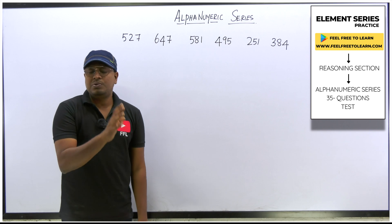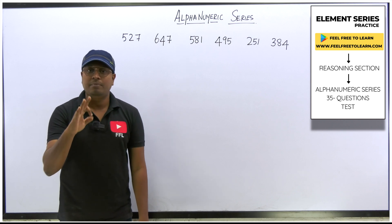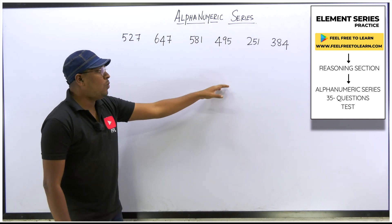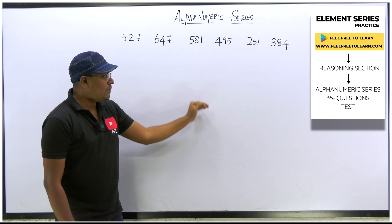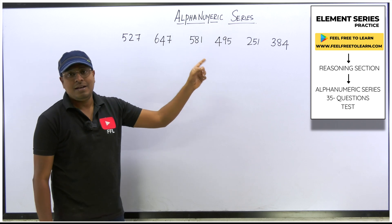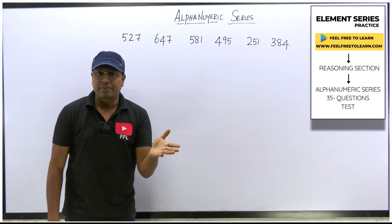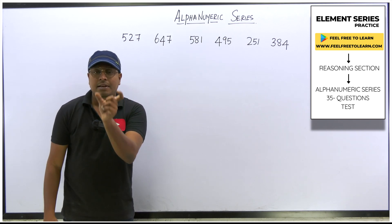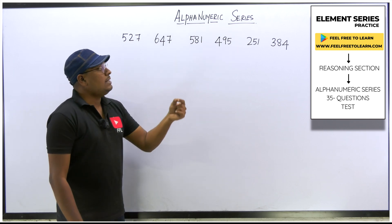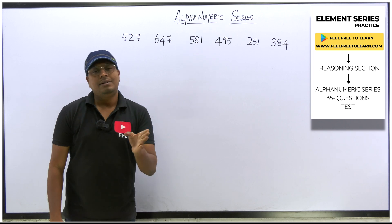Just like element series where I taught you 10 types and gave 30 practice questions, similarly after teaching alpha numerical series I will solve two or three sets. After that, go to my mobile application — in the reasoning ability session you will find a new topic called alpha numerical series with 30 questions for practice. Watch the complete video first, then start the practice.